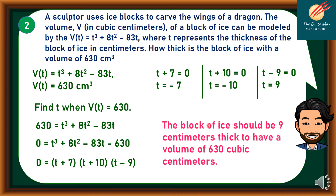We can say that the block of ice should be 9 centimeters thick to have a volume of 630 cubic centimeters.